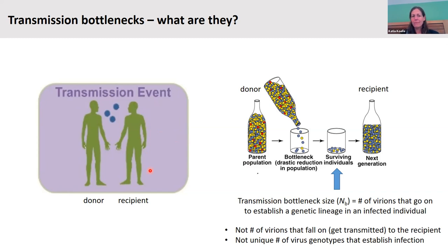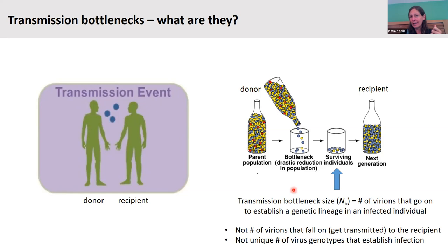The bottleneck size is not the number of virions that fall on the respiratory tract of a recipient, because some of those will not survive — some will go stochastically extinct. It's the unique number of virus genotypes that establish the infection. Transmission bottleneck size is really the founding population size of virions in a new host.